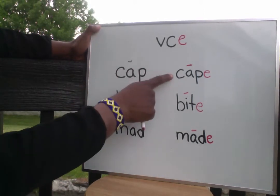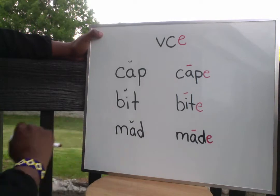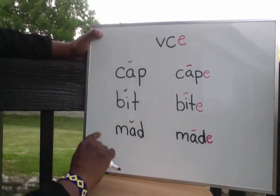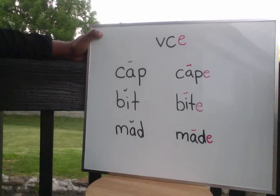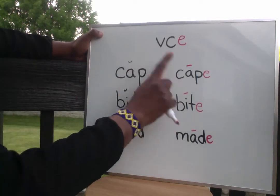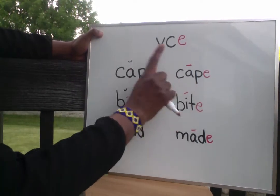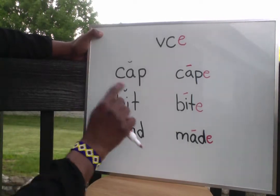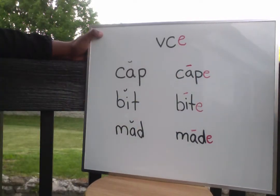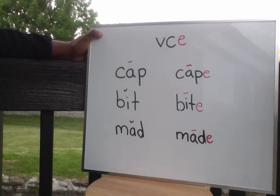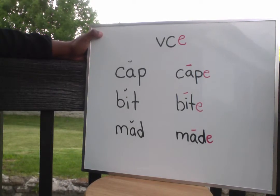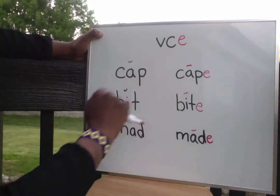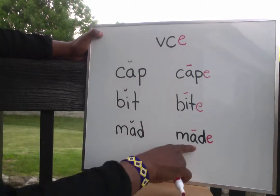Cap, cape, bit, bite, mad, made. So whenever you see a vowel — one vowel — a consonant — one consonant — and then an E at the end, guess what? That vowel sound has changed from a short vowel to a long vowel. And the long vowel sound is just simply the name of the vowel: A, I.